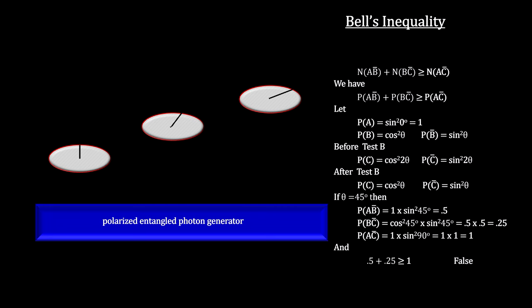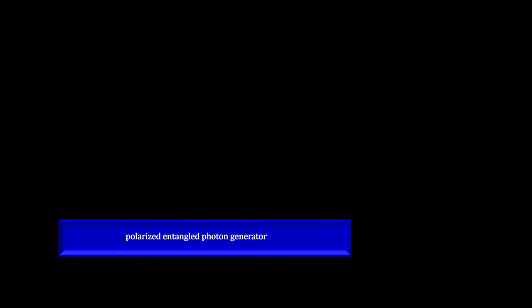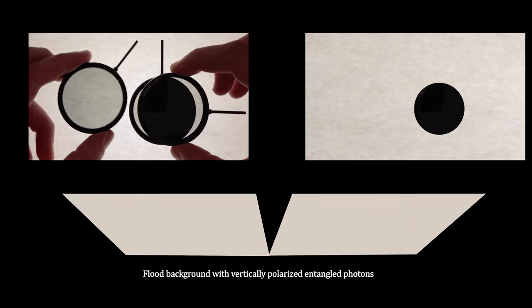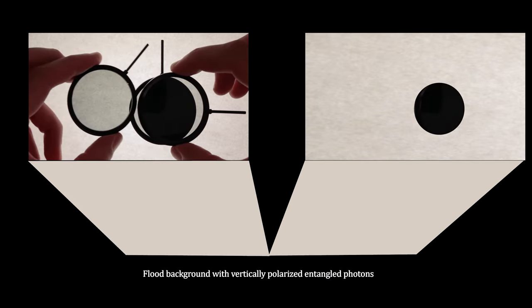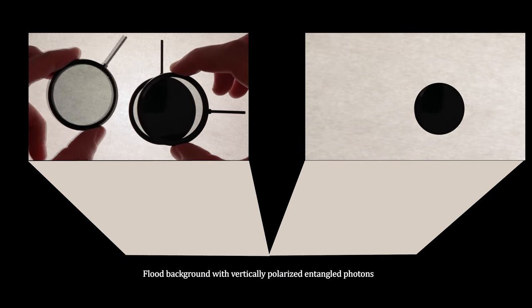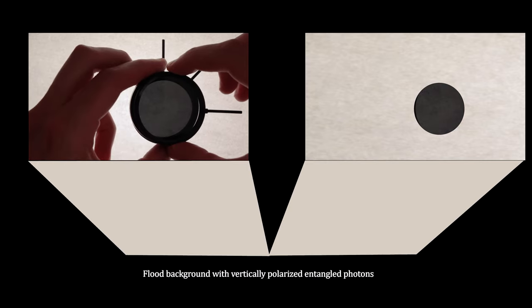The problem is that complex thought experiments like this are filled with assumptions and loopholes. And in the 1960s, there was no known way to build an entangled photon generator. If we could create and manage such photons in large enough numbers, we could flood volumes and see entanglement behavior directly. As of now, this is not possible.